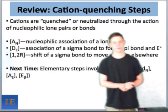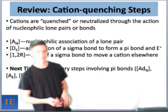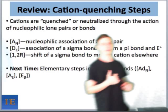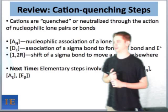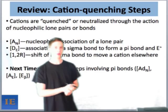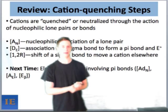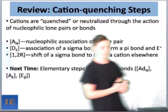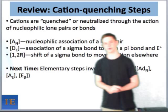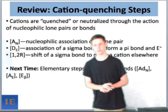To review what we've talked about today: we looked at cation quenching steps — the elementary steps that donate electrons into cations — including the DE step, the AN step, and the 1,2-R step. AN is the nucleophilic association of a lone pair with an empty A orbital on a cation. DE involves the association of a sigma bond and formation of a pi bond, with a group called an electrofuge — which leaves without taking electrons — most commonly H+. Finally, the 1,2-R step moves a sigma bond onto a cation, leaving another cation somewhere else, stabilizing it through extra substitution or resonance delocalization, sometimes leading to unpredictable pathways.